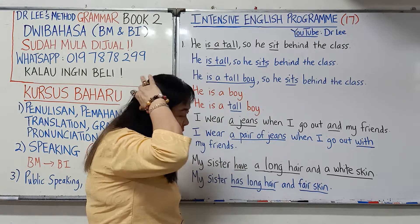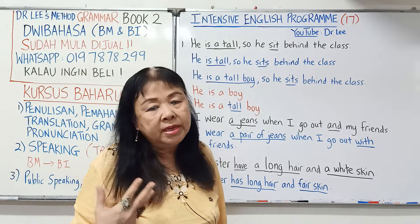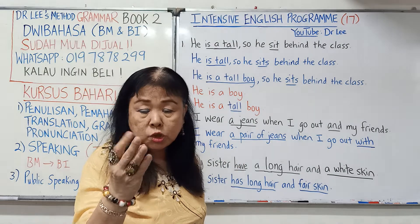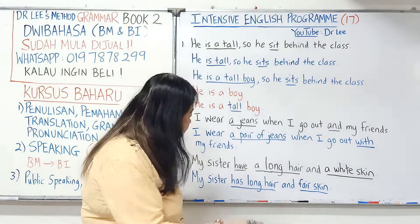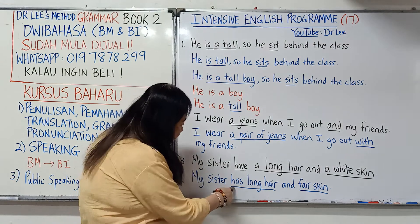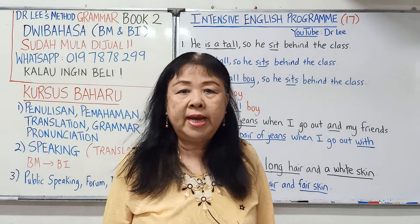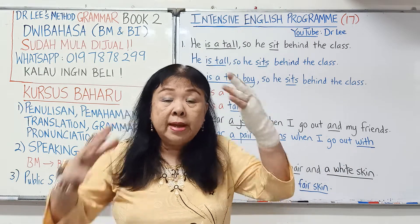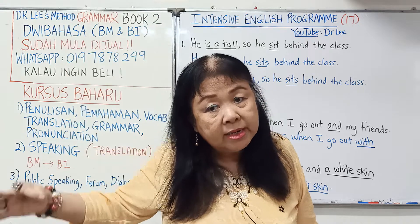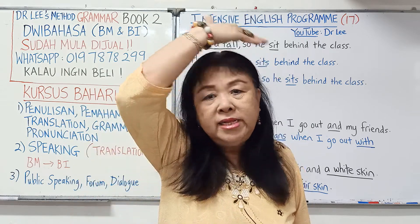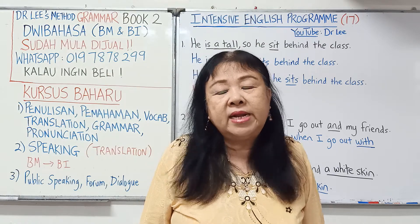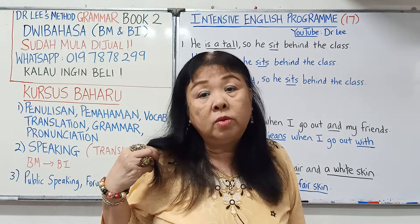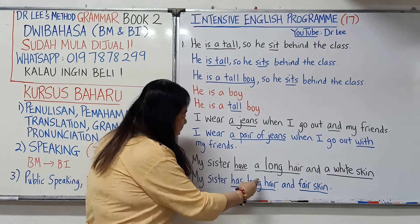'My sister have a long hair and a white skin' — ini kesalahan yang kerap kita tengok. Sister satu orang; she, he, it — kata kerja mesti ada S. Jadi kita tukar ke 'has.' Kemudian, 'a long hair' — A itu satu. Rambut tidak boleh dikira, jadi jangan gunakan A. Kalau tidak boleh kira, jangan tulis A. Sepatutnya: 'my sister has long hair.'